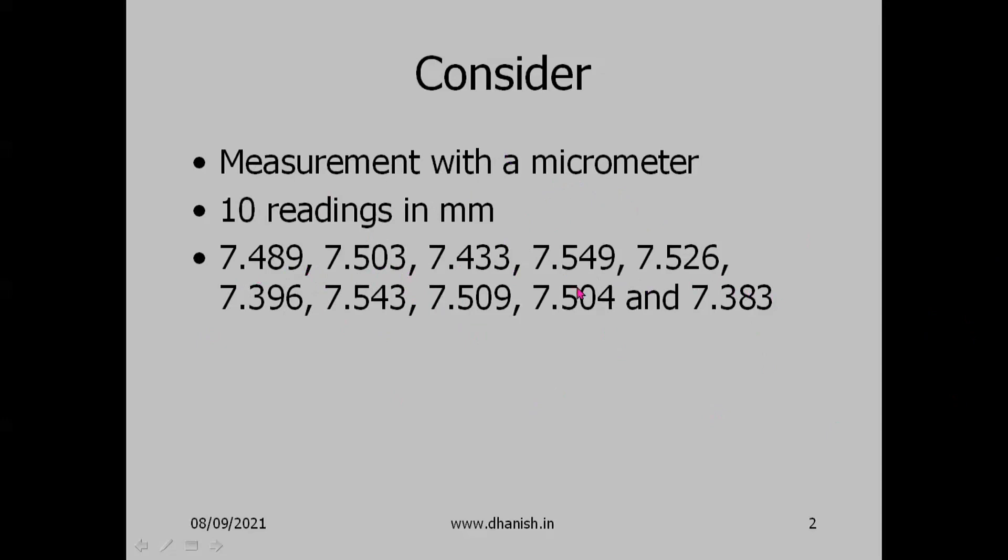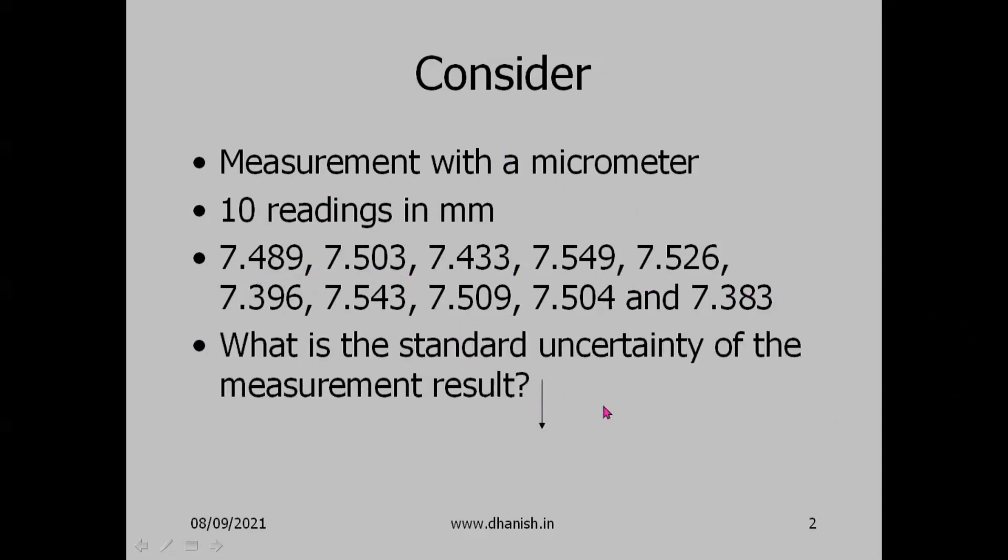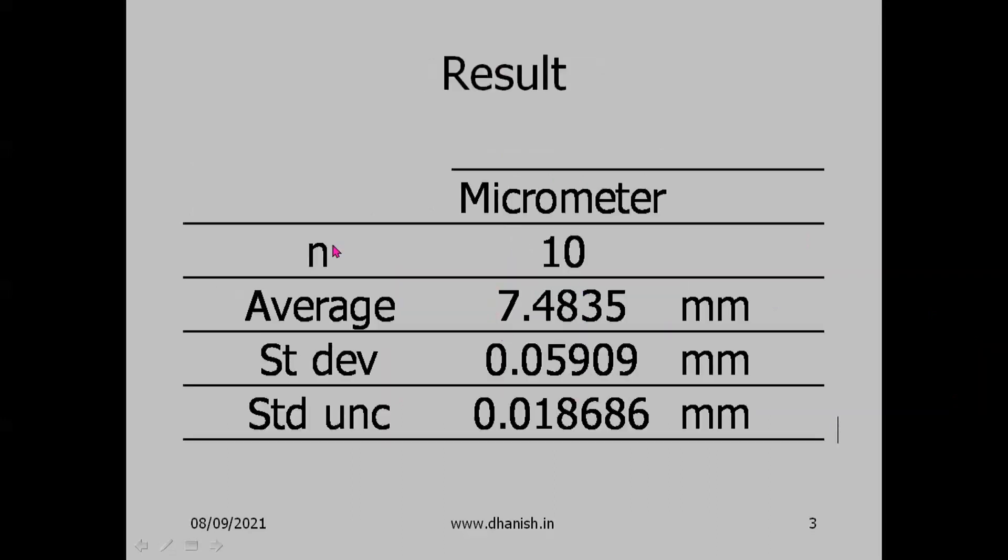You can calculate standard uncertainty due to repeated readings. We have 10 readings, average is 7.4835mm, standard deviation is 0.05909mm, standard uncertainty is 0.018686mm - that's s by root 10.